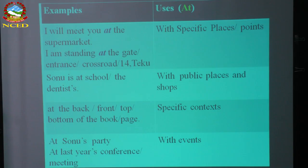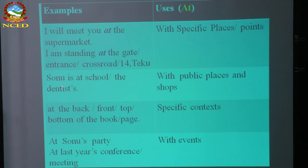Now let's go through the uses. At means with specific places, public places, shops — 'I will meet you at the supermarket,' 'at the gate.' With addresses, we also use 'at.' At school, at the dentist. For specific context: at the back of, front, top, bottom of the book or place — 'at the front,' 'at the top,' 'at the bottom.' With events we use 'at': at Sony's party, at last year's conference meeting.